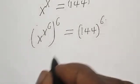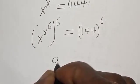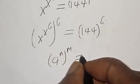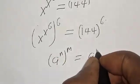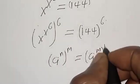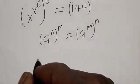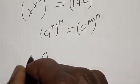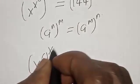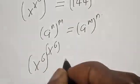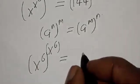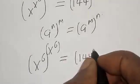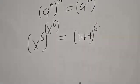On the left-hand side, remember: if you have a raised to power n raised to power m, it is the same thing as a raised to power m raised to power n. Now we have s raised to power of six, raised to power of s raised to power of six, is equal to 144 raised to power six.